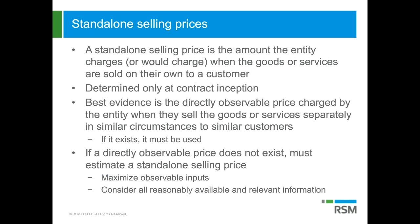What ASC 606 does is establish a two-level hierarchy. There's a directly observable price charged by the entity in similar situations — similar to VSOE — and then you have an estimate of the standalone selling price.